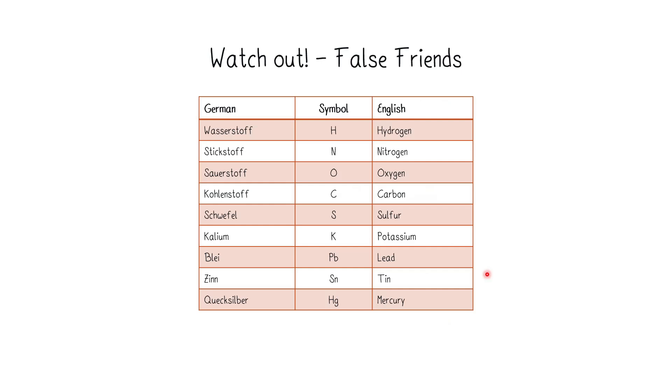Now, I also need to warn you about some false friends. If you're a native German speaker, you can have some problems. And you should memorize these. For example, we have hydrogen, where the symbol is H, in German Wasserstoff. Then you also have nitrogen with the symbol N, which is Stickstoff. Then you have oxygen with the O, which is Sauerstoff. Then you have carbon with the C, which is Kohlenstoff. Then you have sulfur, which is S, which is Schwefel. Potassium, one of the worst things that a lot of people have problems with in the beginning, would be potassium, K for Kalium. Lead, Pb for Blei. Tin, Sn for Zinn. And mercury, Hg for Quecksilber. There are more of these false friends out there. And I just want you to keep an open mind to not get tricked.